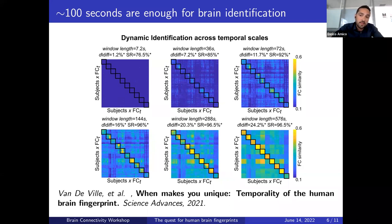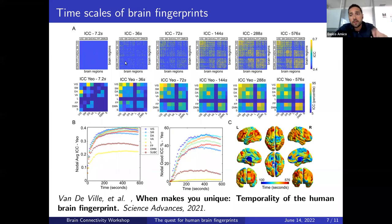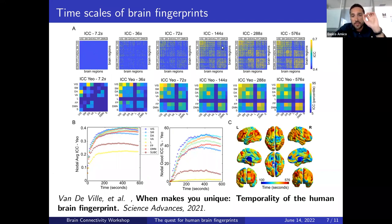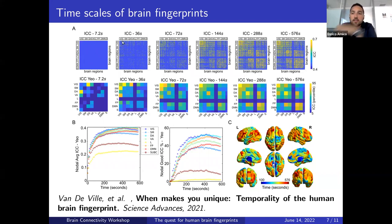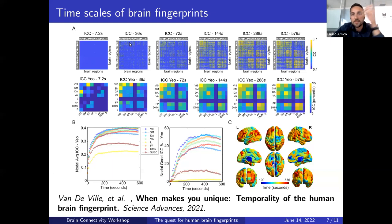Even more interesting was looking for edgewise connectivity fingerprints using intraclass correlation — every yellow spot in the matrix is a functional connectivity link that allows differentiation of subjects from each other. These links are ordered by Yeo functional networks and subcortical regions using the Schaefer 400-node parcellation. At short time scales, you see many yellow spots connecting visual and somatomotor systems, and the fingerprint links are largely within visual, somatomotor, and attention networks.